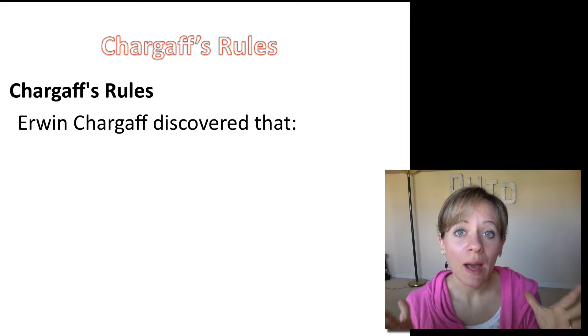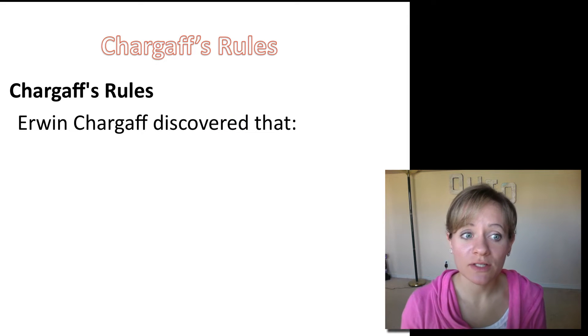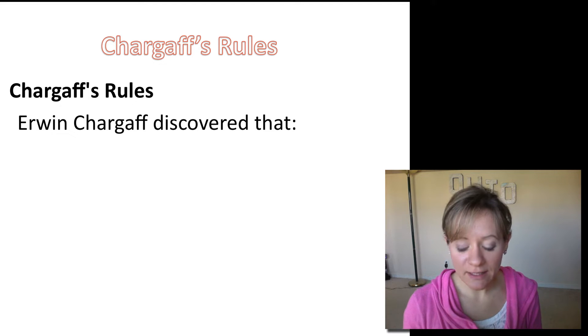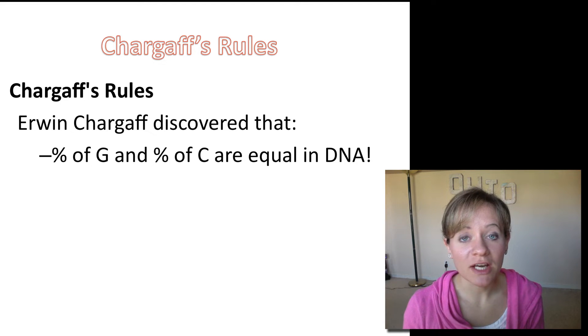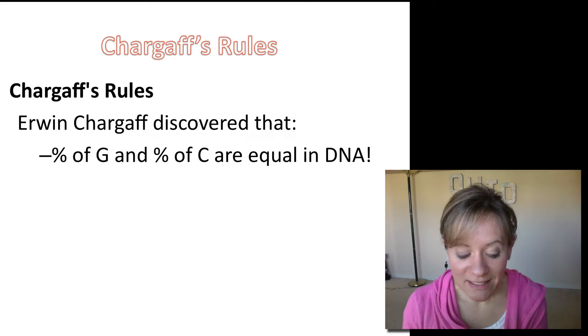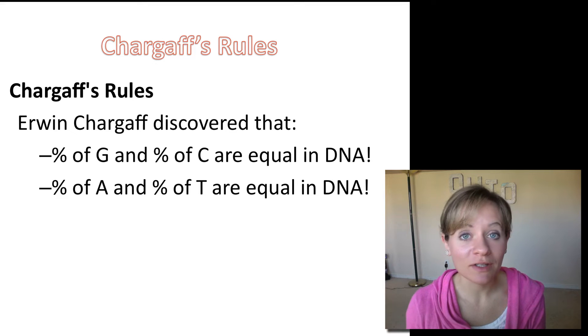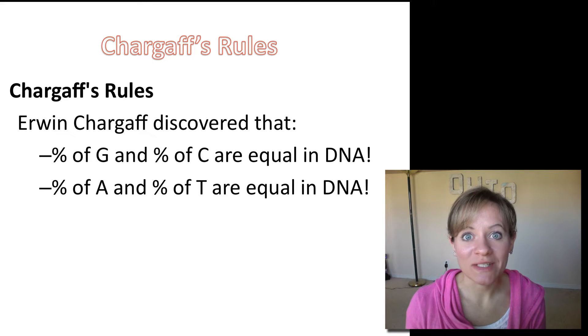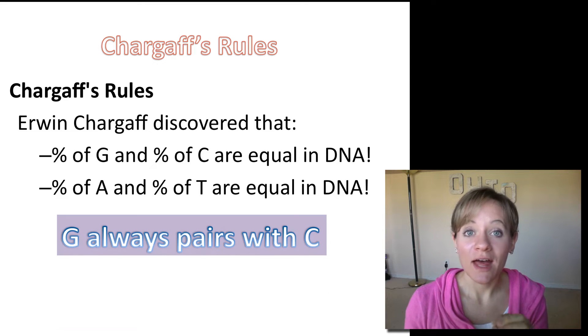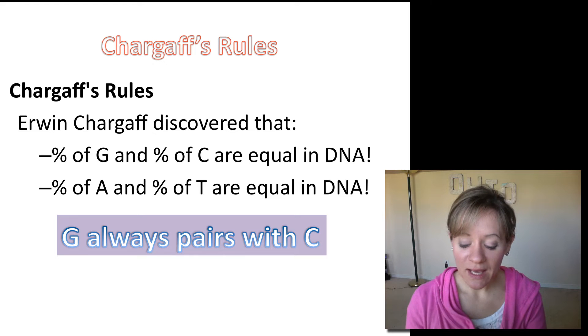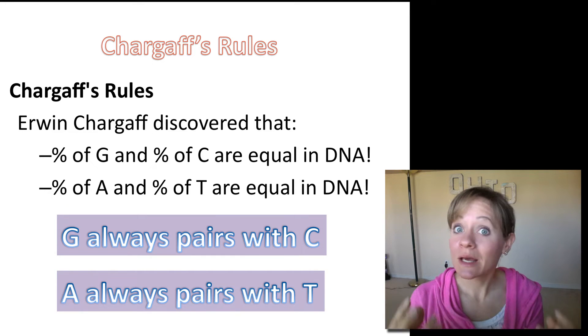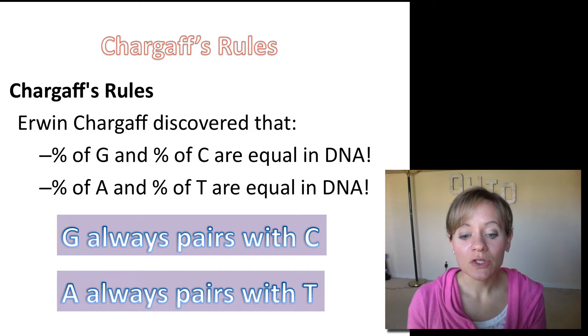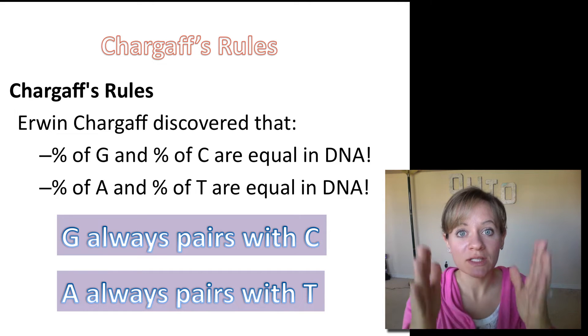Now how do these nucleotides actually make up the structure? Well, another scientist called Erwin Chargaff discovered that when he was looking at DNA, the percent of G and the percent of C in any given molecule were always the same. Additionally, the percent of A and T in any DNA molecule he looked at, no matter what organism he was studying, A and T were always equal. So what this means is that G is always pairing with C because they're always in equal amounts, and A is always pairing with T because they are always in equal amounts.